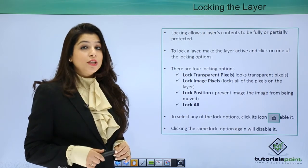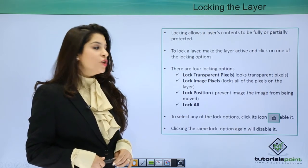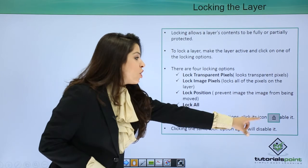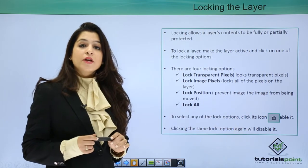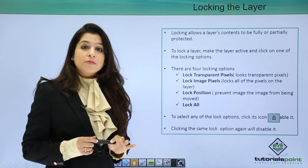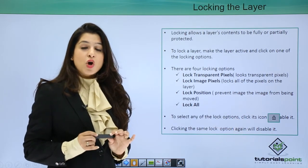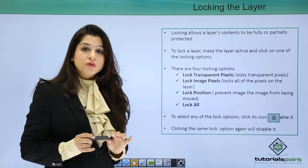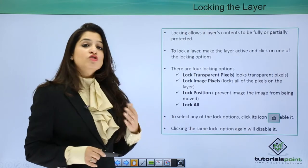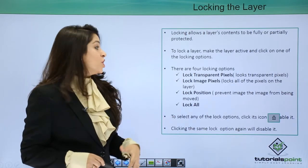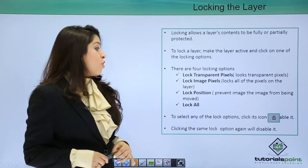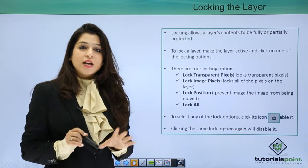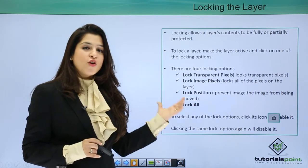Locking allows a layer's content to be partially or fully locked. To fully lock a layer, you can simply use the lock panel at the bottom, and the layer will be protected. Locking the layer means it cannot be moved or affected by whatever you do. There are four options: you can lock the transparent pixels, lock the image pixels, lock the position, or click lock all to lock the entire layer.